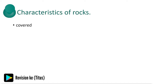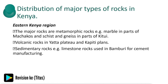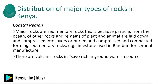Distribution of major types of rocks in Kenya: in Eastern Kenya, the major rocks are metamorphic rocks, including marble in parts of Machakos. There are also volcanic rocks in Yatta, Athi, and Kapiti Plains. Sedimentary limestone rocks are found there, used in Bamburi for cement manufacturing. In the coastal region, the major rocks are sedimentary rocks, formed as particles from the ocean or other rocks and plant and animal remains are laid down and compressed. For example, limestone at Bamburi is used for cement manufacturing. There are also volcanic rocks in Tsavo reaching groundwater resources.